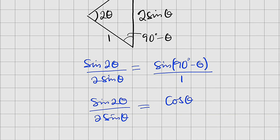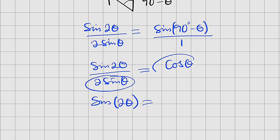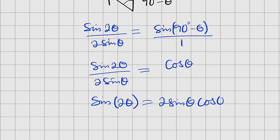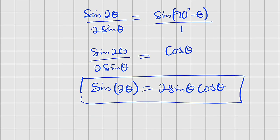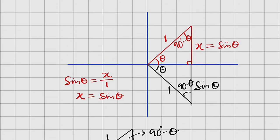Sine of two theta divided by two sine theta equals — from the co-function identity — cosine of theta, as covered in my previous lesson. Dividing by one does not change it, so by cross multiplication we have sine of two theta equal to two sine of theta multiplied by cosine of theta. So we have proved that sine of two theta equals two sine theta cosine theta.